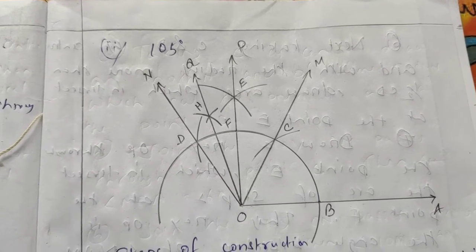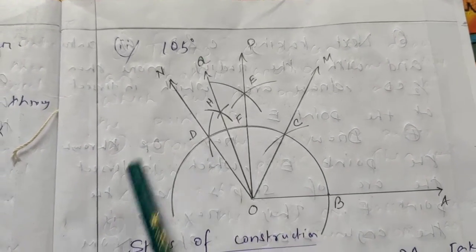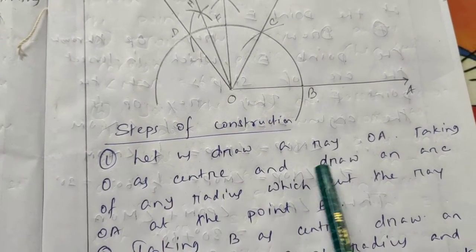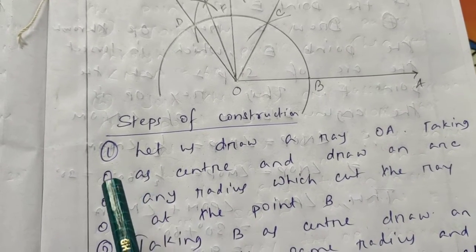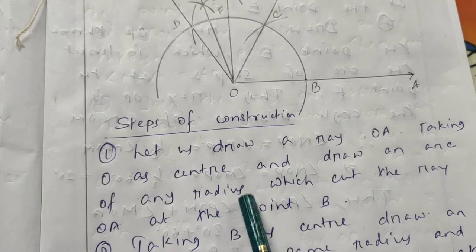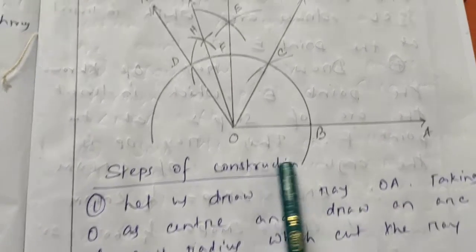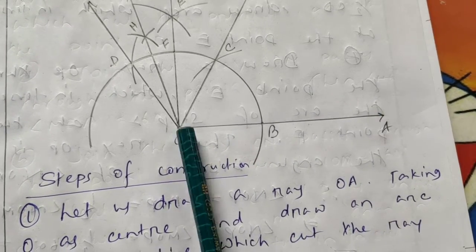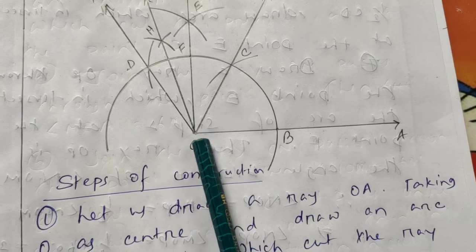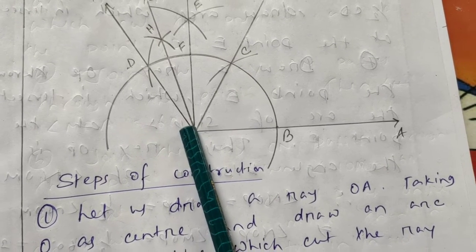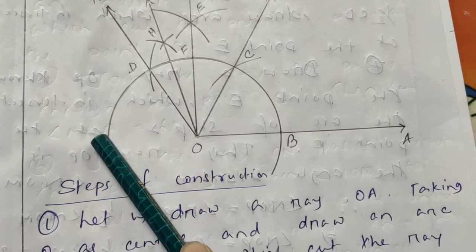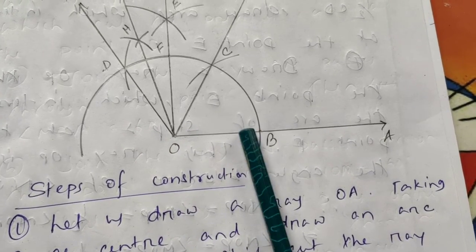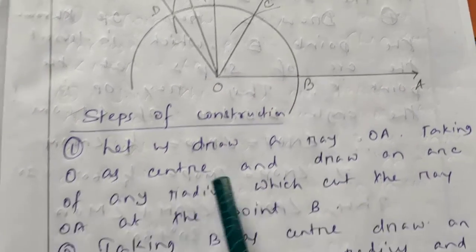The second question requires drawing a 105-degree angle using similar construction steps. First, draw a ray OA. Taking O as center, draw an arc of any radius with the compass, which cuts the ray OA at the point B.